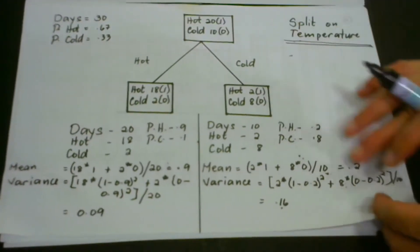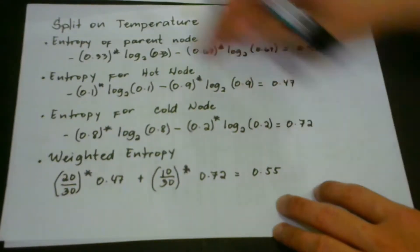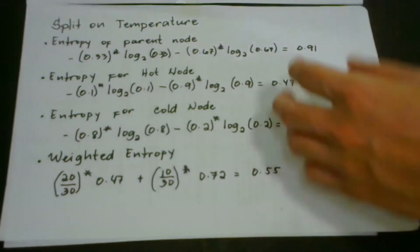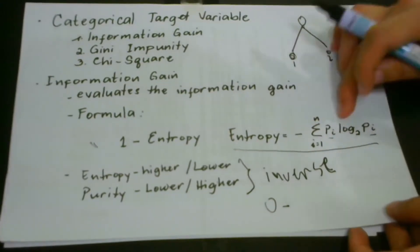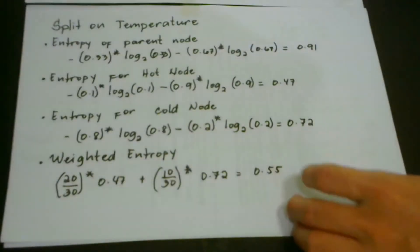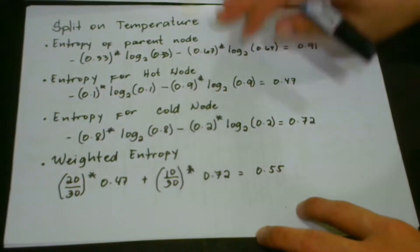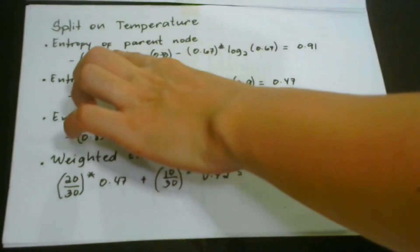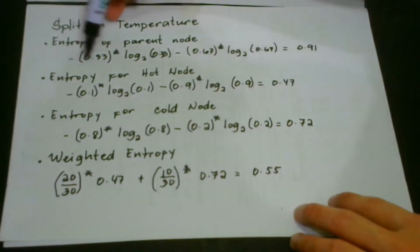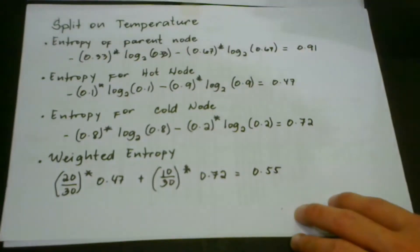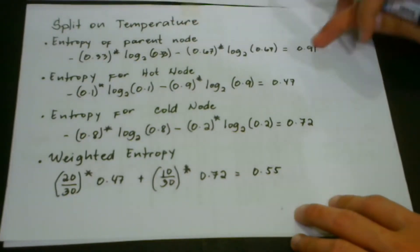The first step is to get the entropy of the parent node. Using the entropy formula, we plug in the probability values of our parent node: 0.33 and 0.67. These values are plugged into our formula, and we get the result: the entropy of the parent node is 0.91.